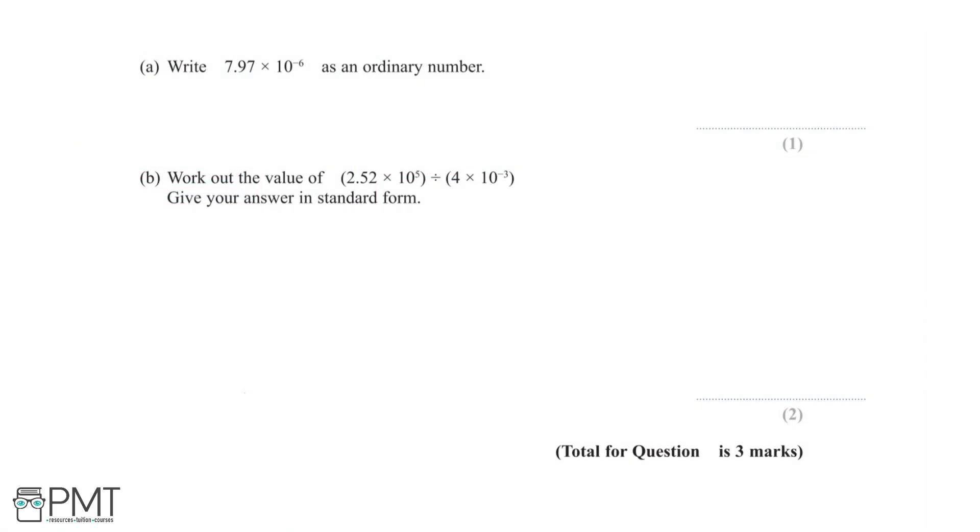In part A, we are asked to write 7.97 × 10^-6 as an ordinary number. The first thing we need to do is recognize that this number has been given to us in standard form.